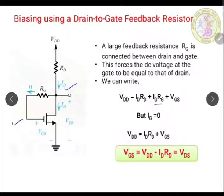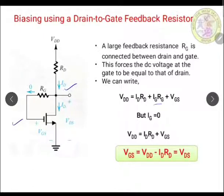From the simplified KVL equation, VGS = VDD − ID·RD. Also, because the gate is connected back to the drain, VGS = VDS = VDD − ID·RD. This biasing technique stabilizes the drain current and fixes the biasing point.